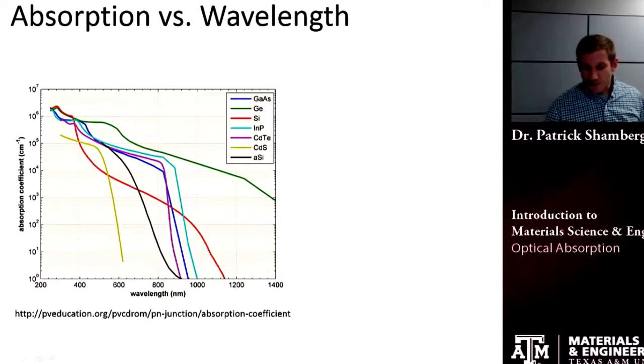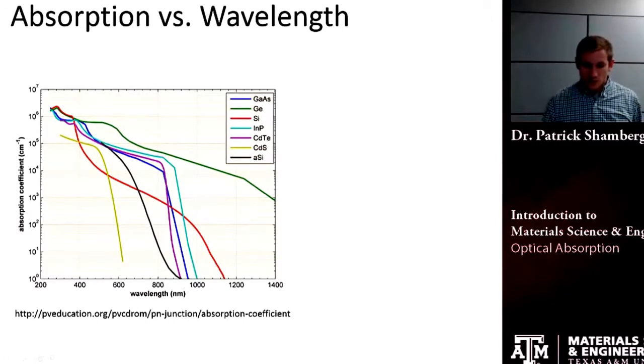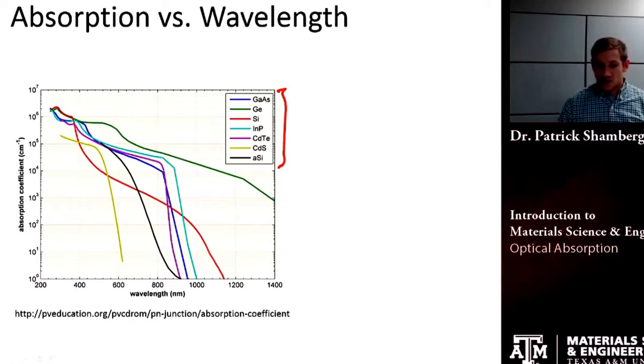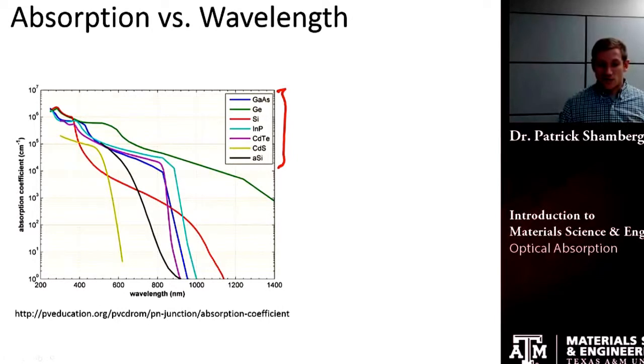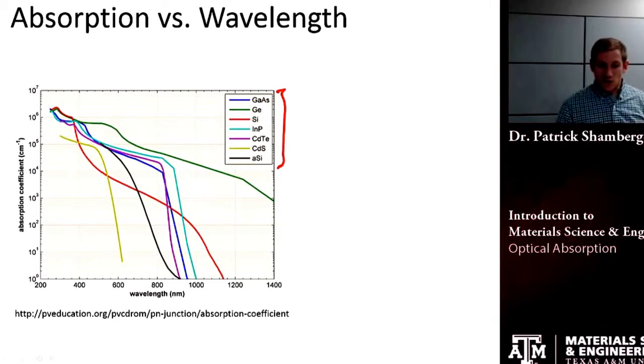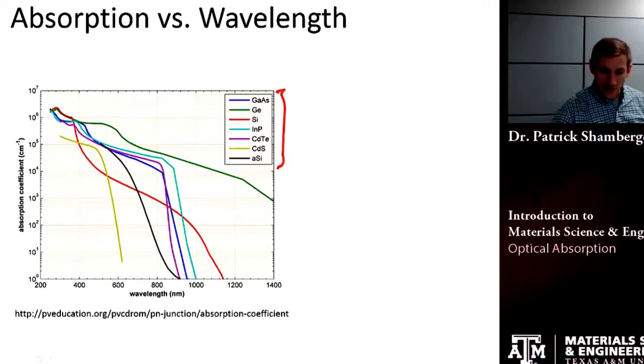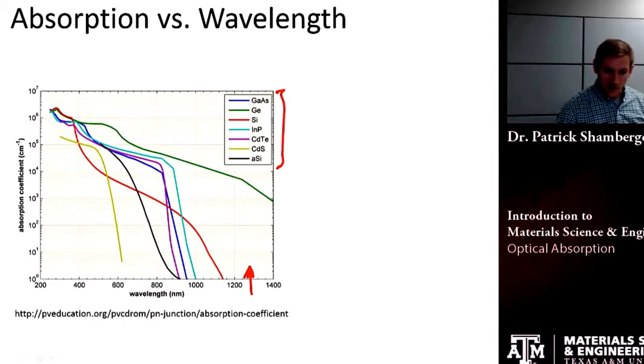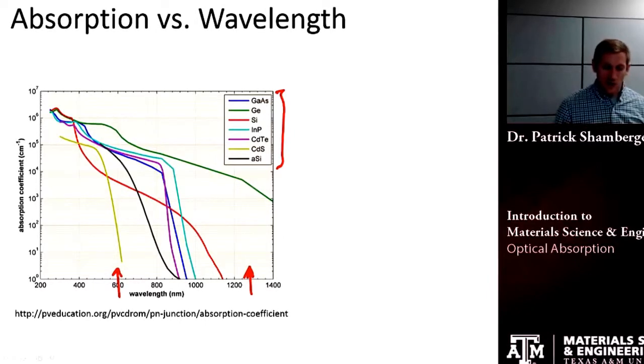There are a couple of different ways to show this. This is one potential way. These are a bunch of different semiconductors, and they all have different band gaps. The materials with the small band gaps are the ones that we see over here, and larger band gaps are over this way.